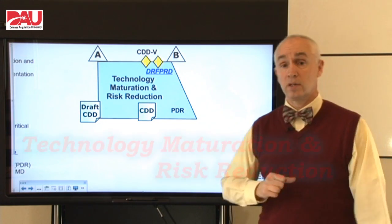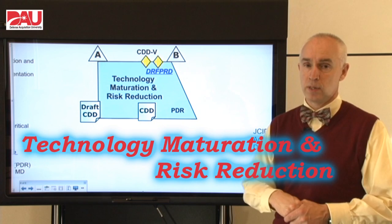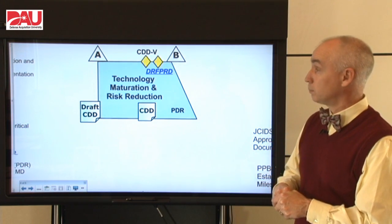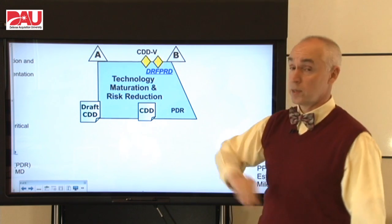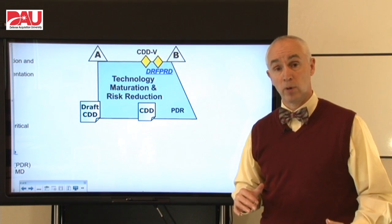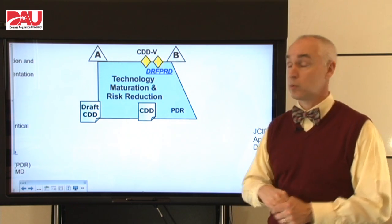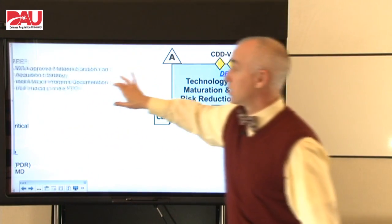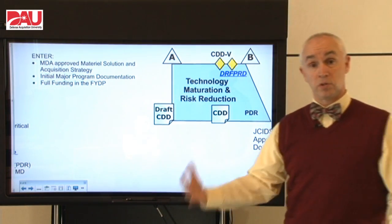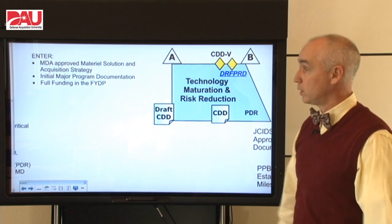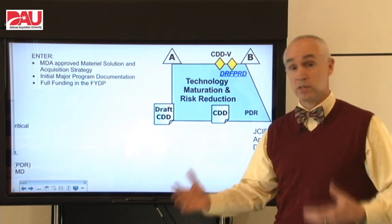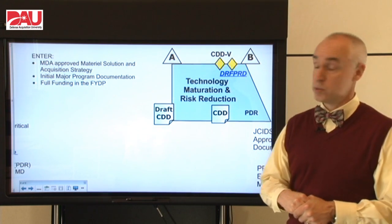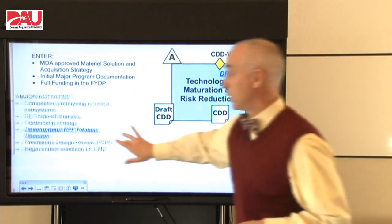The next phase is Technology Maturation and Risk Reduction — that's a new name; it used to be Technology Development. Technology Maturation and Risk Reduction is just what it says: we are maturing the technology and reducing the program risks, generally through competitive prototyping. To get that Milestone A, you need an approved material solution — what's the best technology to go forward with — initial major program documentation like your Test and Evaluation Master Plan, and full funding in the Future Years Defense Program.